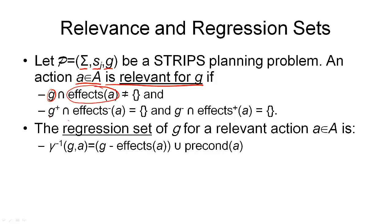Secondly, the positive goals of the goal description and the negative effects of the action must not intersect. And the negative goals and the positive effects also must not intersect. This means the goal must not conflict with the effects of the action. If we had a negative effect of the action that was also a positive goal, that means this action would delete this goal from our state, so it would no longer hold. The second case is just the other way around: a positive effect that adds a negative goal to the state, which we don't want. So an action is relevant for a goal if it contributes to the goal — that's the first condition — and if it does not interfere with the goal in a negative way — that's the second condition.